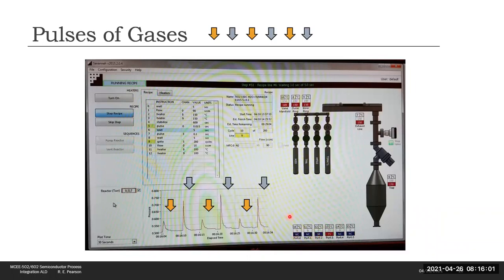This is a picture of the ALD tool screen during a deposition. The spikes in the pressure versus time graph show each pulse of the precursors, the H2O followed by the corresponding precursor. One pulse of each constitutes a cycle.